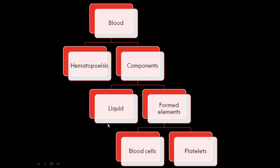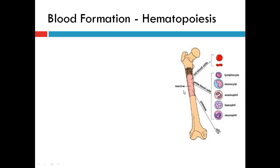Let's look at this flowchart to give you a frame of reference for where we're headed. We're going to first look at hematopoiesis, which is blood formation, and then look at the components of blood. We'll start with the liquids such as plasma, and then move to the solids, which include the two types of blood cells — red and white — in addition to the blood fragments, the platelets. So without further ado, hematopoiesis.